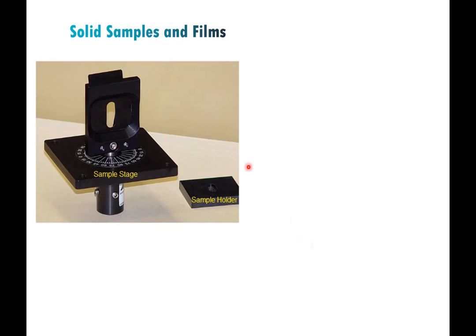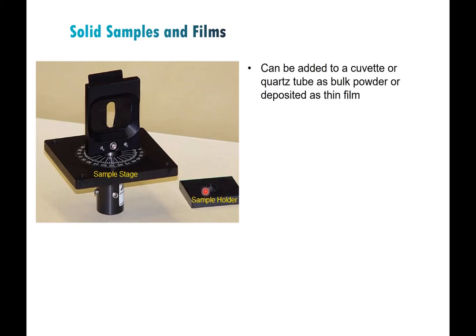For solid samples or films, you'll typically use a rotatable stage that allows you to change the angle of the sample relative to the excitation beam and emission detector. Many come with a little sample holder where you can pack the solid in, though that doesn't do a good job of keeping air out. You can also add a solid as a bulk powder or deposit as a film in a cuvette — in an EPR tube you can put a solution in, evaporate the solvent, and get a deposited film on the side of the tube.